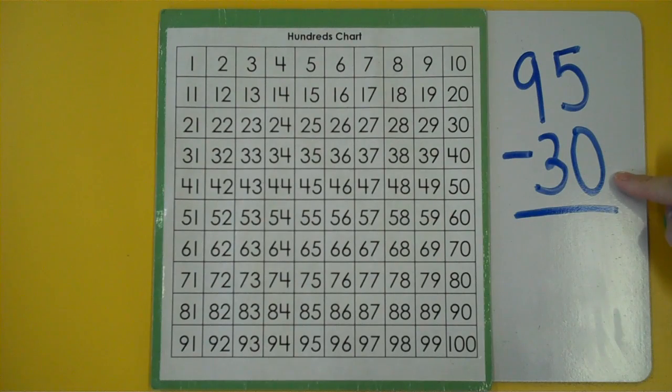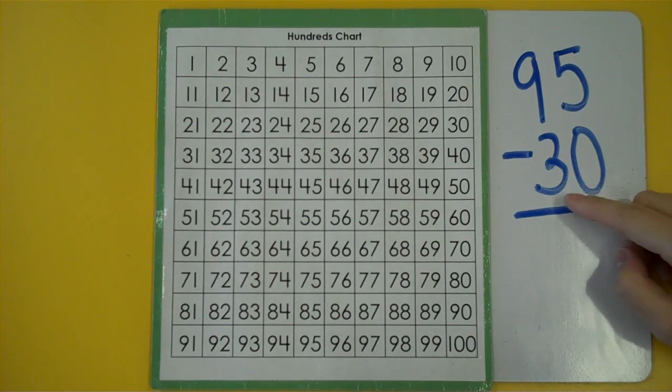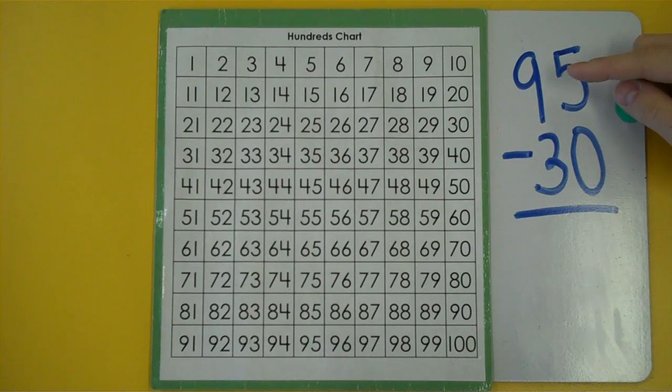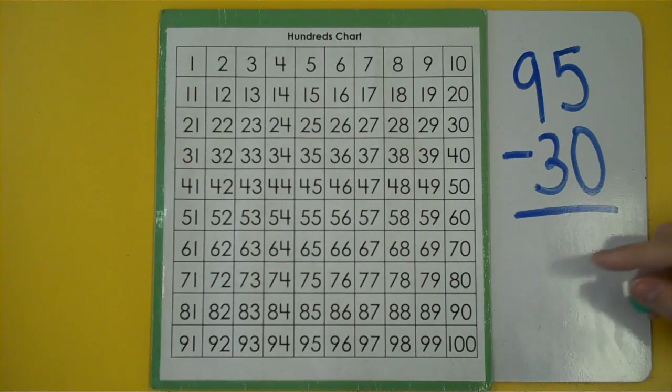In this question I don't have any ones, which means I could skip count by tens. So I could skip count 10, 20, 30. And in subtraction on the hundreds chart we are going to go up.